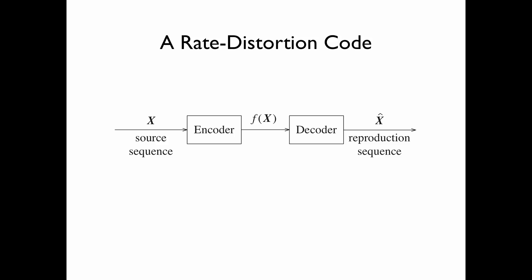This is an illustration of a rate-distortion code. The source sequence x is fed to the encoder to produce the index f(x). Then the decoder, based on the index f(x), outputs the reproduction sequence x-hat.